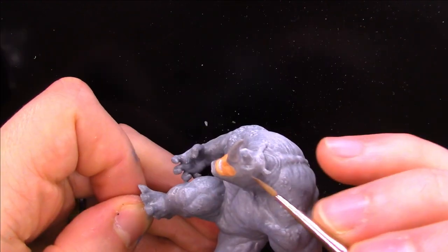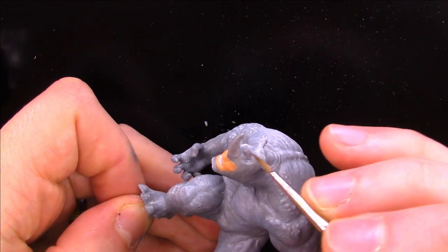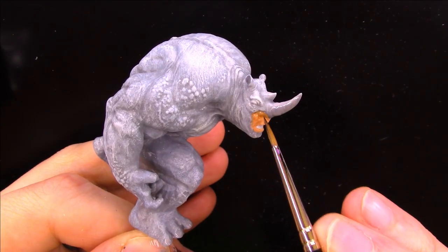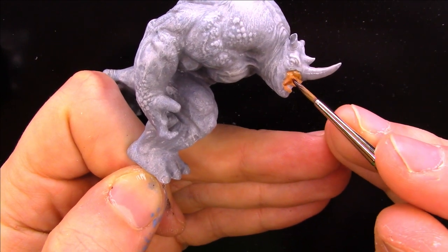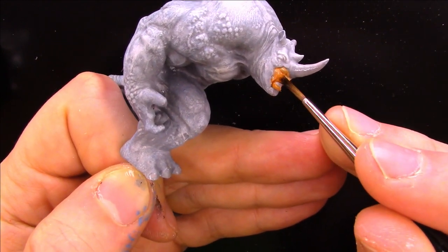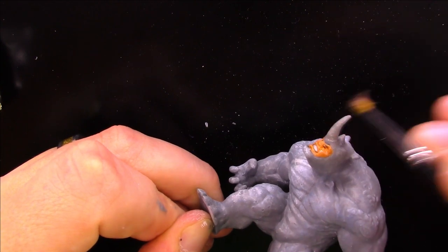Then I take some more ash gray and I paint the horns and the toes. I add a flesh wash to his face as well. If you notice I do not add any wash to the body. Today we aren't using any kind of washes and relying solely on inking and with the horn I dry brush a little skeleton bone on there for more color.